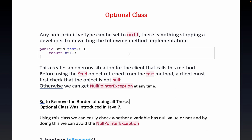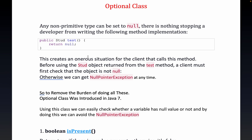We are going to focus on why Optional was introduced, how we are going to use it, and also show a demo of how exactly this works. So first, let's focus on why it was introduced and what things it helps a developer to avoid. Any non-primitive data type can be set to null — for example, a method of Student type can always return null.